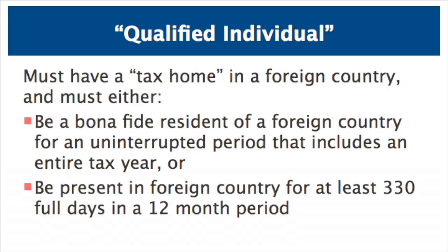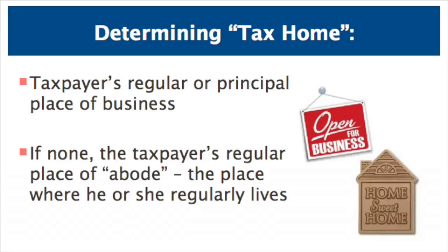To be a qualified individual eligible for the exclusion, the U.S. citizen or resident must have a tax home in a foreign country and must either be a bona fide resident of the foreign country for an uninterrupted period that includes an entire tax year, or be present in the foreign country for at least 330 full days during a 12-month period. The taxpayer's tax home is considered to be the location where the taxpayer's regular or principal place of business is located. If, because of the nature of the business, the taxpayer does not have a principal or regular place of business, his tax home is his regular place of abode — the place where he regularly lives.